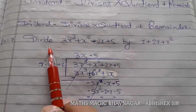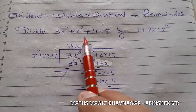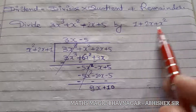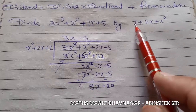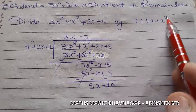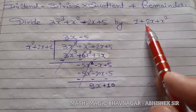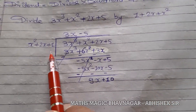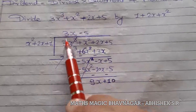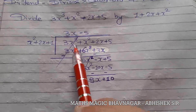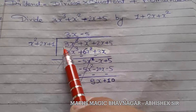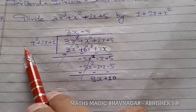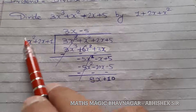In example number 7, they are telling us to divide 3x³ + x² + 2x + 5 by 1 + 2x + x². We will arrange the divisor into decreasing order, giving us x² + 2x + 1. The dividend 3x³ + x² + 2x + 5 is already arranged. Dividing the first term of the dividend by the first term of the divisor: 3x³ divided by x² gives 3x, so 3x is the first term in the quotient.